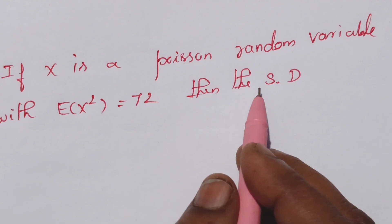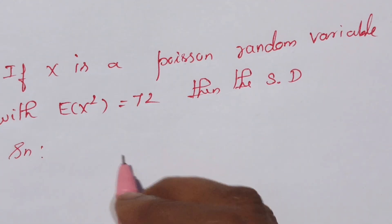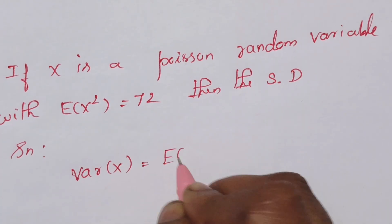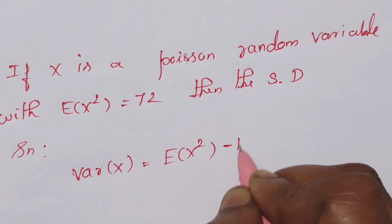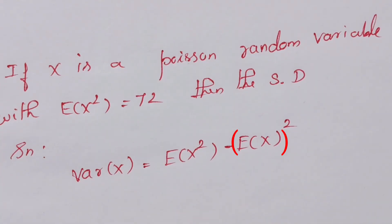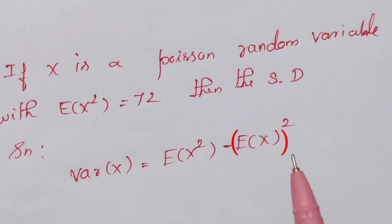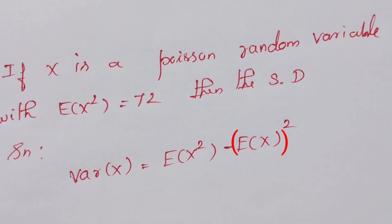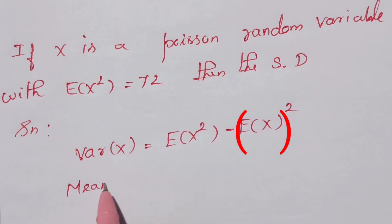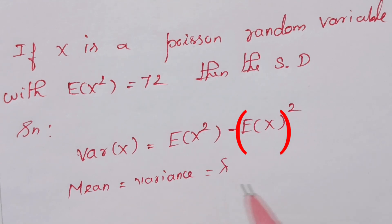We need to find the standard deviation. What do we know about the formula? Variance of X is E[X²] minus (E[X])². For a Poisson distribution, mean equals variance equals lambda. So, mean equal to variance equal to lambda.